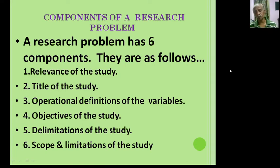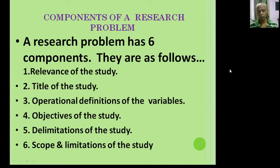What are the components of a research problem? In overall, there are six elements or six components in a research problem. These are: one, the relevance of the study; two, the title of the study; three, operational definitions of the variables; four, objectives of the study; five, delimitations of the study; and six, scope and limitations of the study.